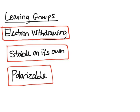So in this video, I'm going to talk about leaving groups for organic chemistry reactions. And so there are three things to consider when you want to determine whether something is a good leaving group or a bad leaving group.